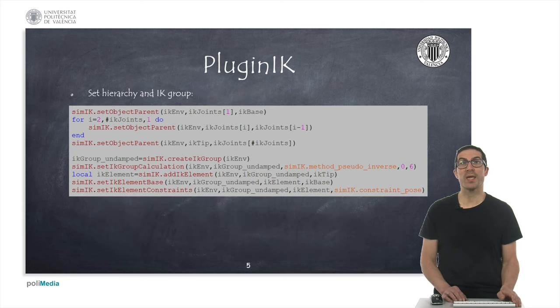Once IK dummies and IK joints have been created, we need to set a proper hierarchical relationship between the IK elements, and create an IK group to indicate the type of task we want to solve, a six-dimensional pose task. It is important to remark that Robot Jacobian will depend on the type of constraints we use here. In this particular example, I'm using the SIMIK constraint pose, as you can see in the last line of code, in order to obtain the full Robot Jacobian matrix.